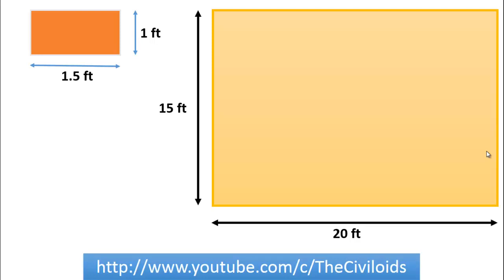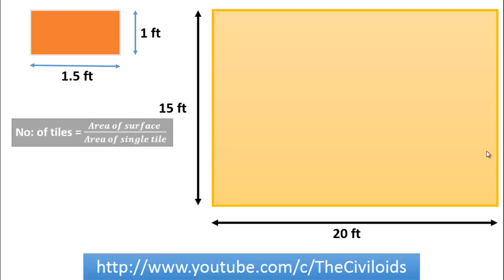Different sizes of tiles are available at the market. For this example, we are using the tile having dimensions 1.5 feet and 1 foot. The number of tiles required for covering a surface can be determined by using a simple formula: area of the surface divided by area of a single tile. So for this problem, we need to find the area of the covering surface and the area of the tile.